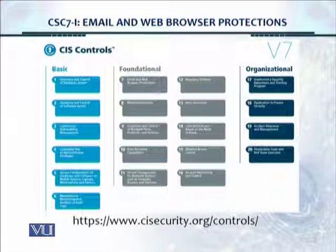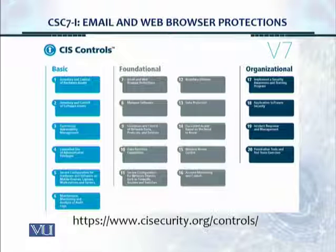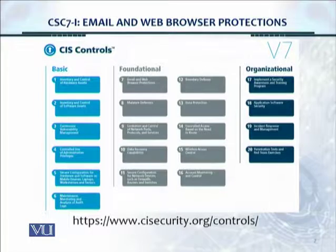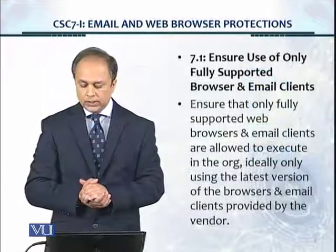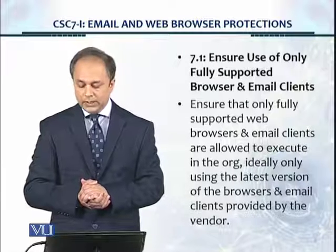So email is also very, very important to protect. We need to protect against spam in the email, malicious attachments in the email, and other malicious emails that are coming through. This is another look at the graphic. We're looking at CIS Controls version 7, and we've moved on to the foundational controls. Control number 7 is email and web browser protections. Control 7.1 is: ensure use of only fully supported browser and email clients.